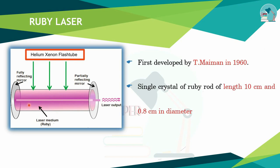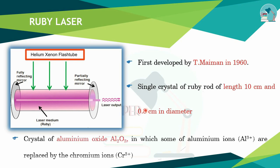The laser medium is a single crystal ruby rod with a length of 10 cm and a diameter of 0.8 cm. The crystal is aluminum oxide, in which some aluminum ions are replaced by chromium ions. This completes the Ruby laser construction.